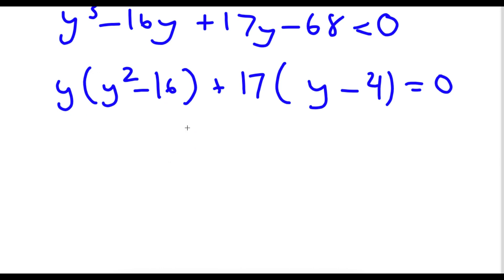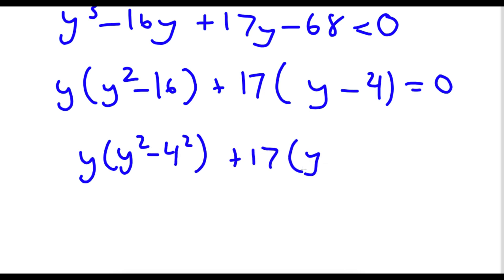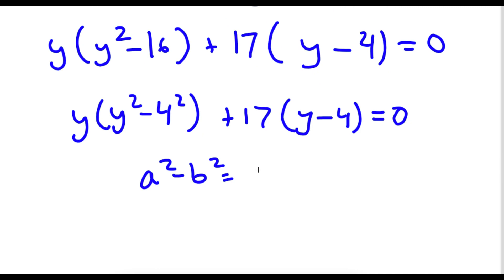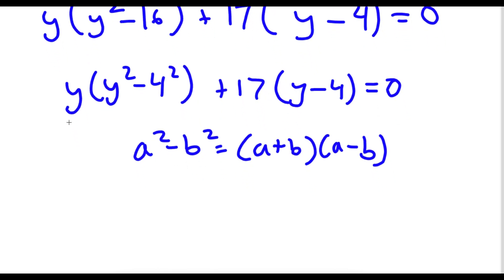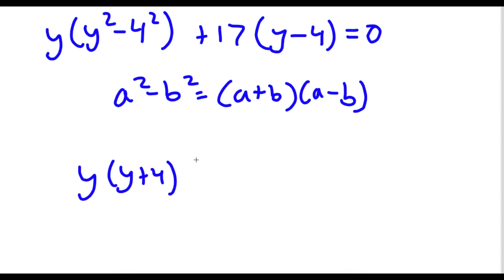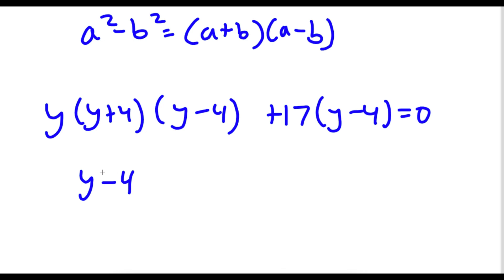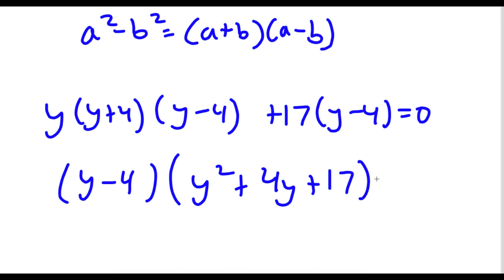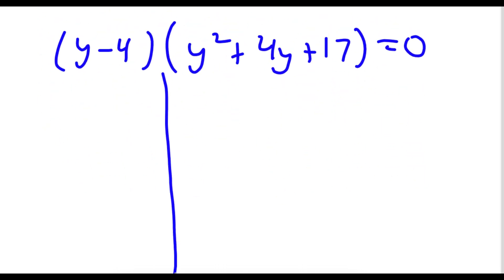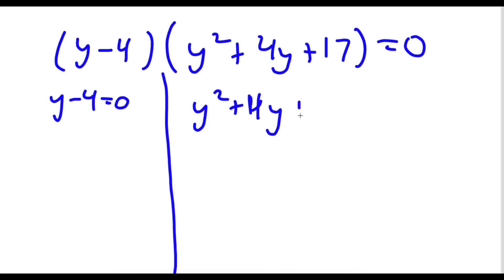Now 16 is the same thing as 4 squared. So I have y times y squared minus 4 squared, plus 17 times y minus 4, all equal to 0. And since a squared minus b squared equals a plus b times a minus b, y squared minus 4 squared equals y plus 4 times y minus 4. So I can factor out y minus 4 from the whole expression and I get y minus 4 times y squared plus 4y plus 17 is equal to 0. This gives me two equations: y minus 4 equals 0, and y squared plus 4y plus 17 equals 0.